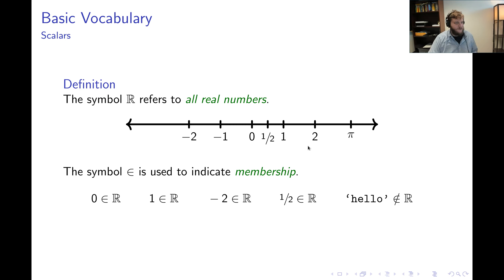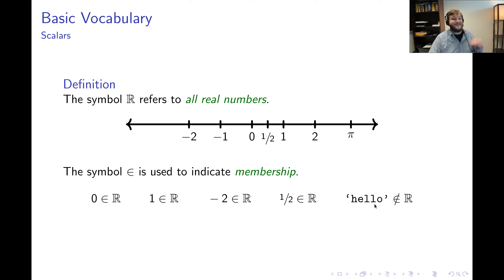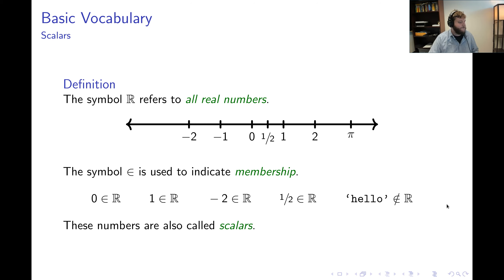One piece of notation that will prove useful is the membership symbol — this fancy E. We use it to indicate membership. So to efficiently communicate that zero is a real number, we write 0 ∈ ℝ, similarly 1 ∈ ℝ, −2 ∈ ℝ, and so forth. The word 'hello' is not a real number, so we'd write hello ∉ ℝ. We'll often casually refer to real numbers as scalars — we use those terms interchangeably.